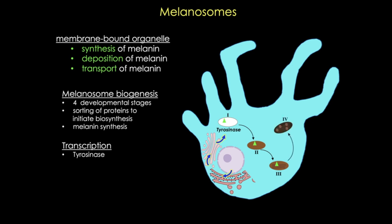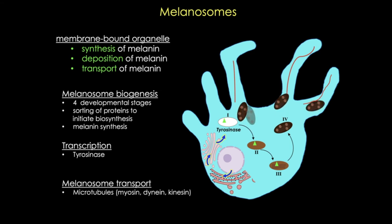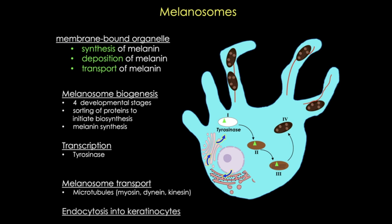These melanosomes then need to be transported out into the filipodia. They do this using myosin, dynein, and kinesin motors—I think of these as cargo containers moving on railroad tracks. Eventually they contact the keratinocytes and are endocytosed by them, where the keratinocytes unload the cargo and accumulate melanin granules above their nuclei.